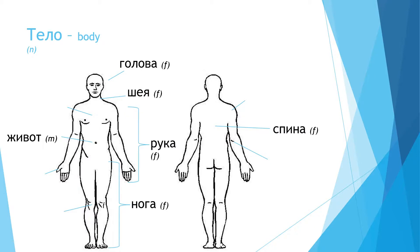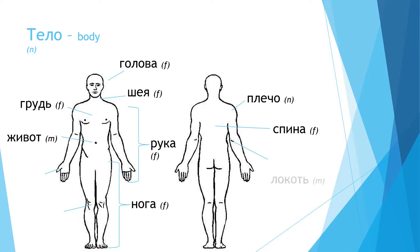But for flavor, we're gonna go over a few more. There's shoulder — плечо — chest — грудь. Notice this one doesn't end in А, but it is still female. And then the elbow. Those are just some extra body parts for you.